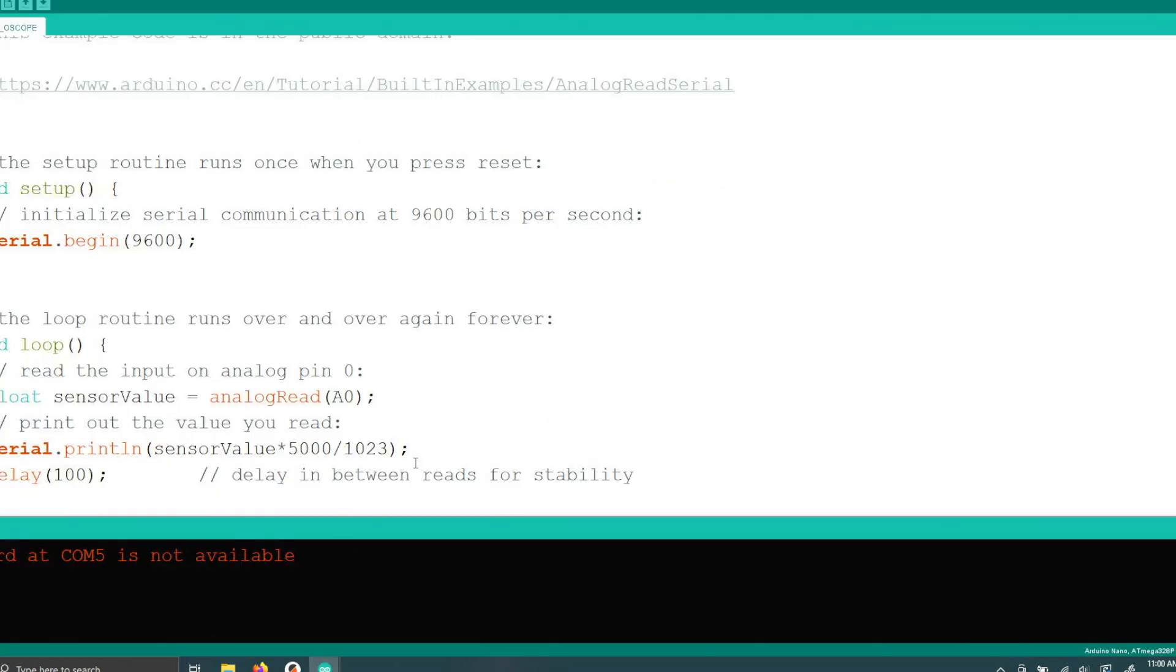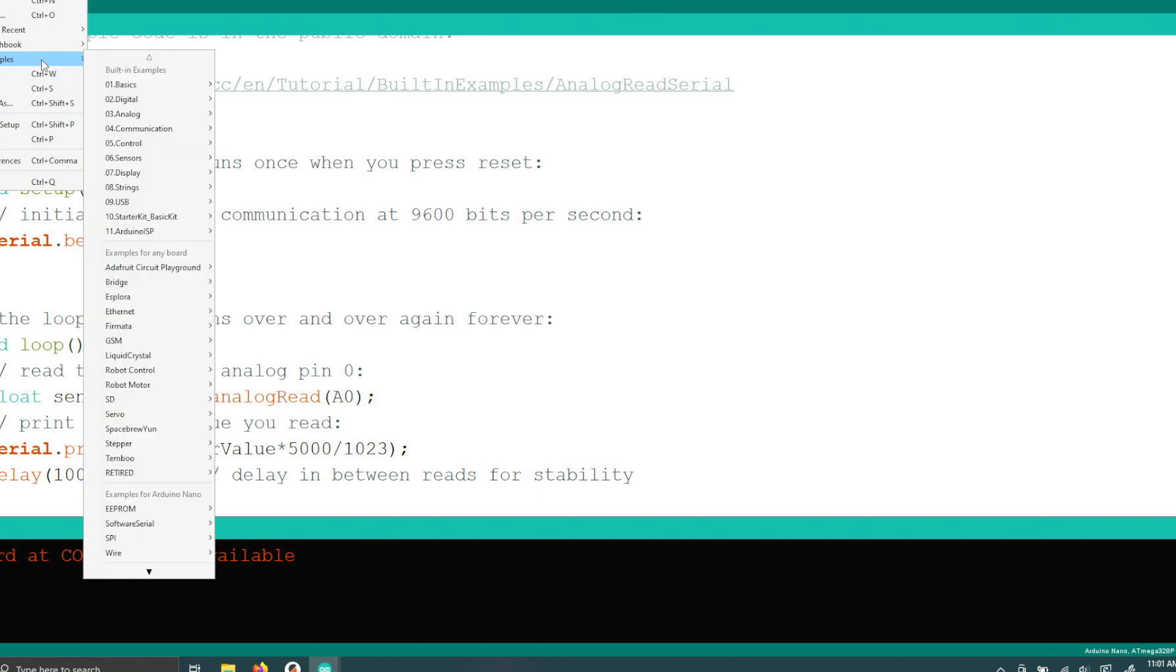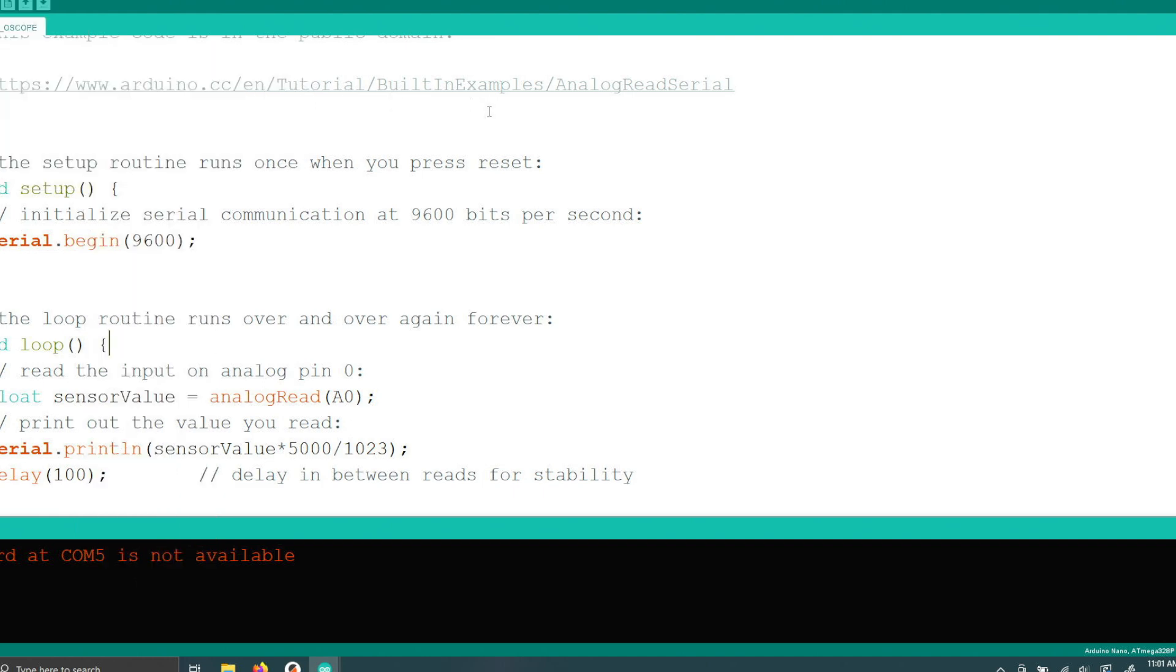And I also said I was going to show you how I took my measurement with the Arduino, so let me show you that real quick. I actually just go to File, Examples, and then Basics, AnalogReadSerial. And I just modified it a small bit. All I did was change this data type to a float and I applied this scaling here to see my value in millivolts.